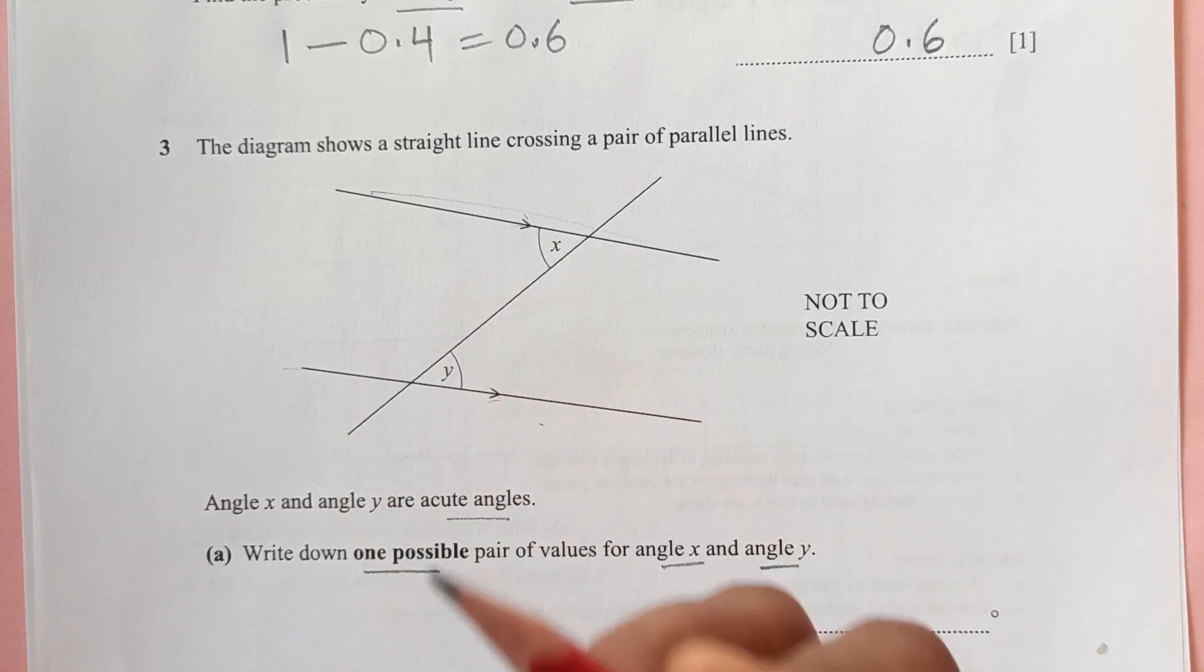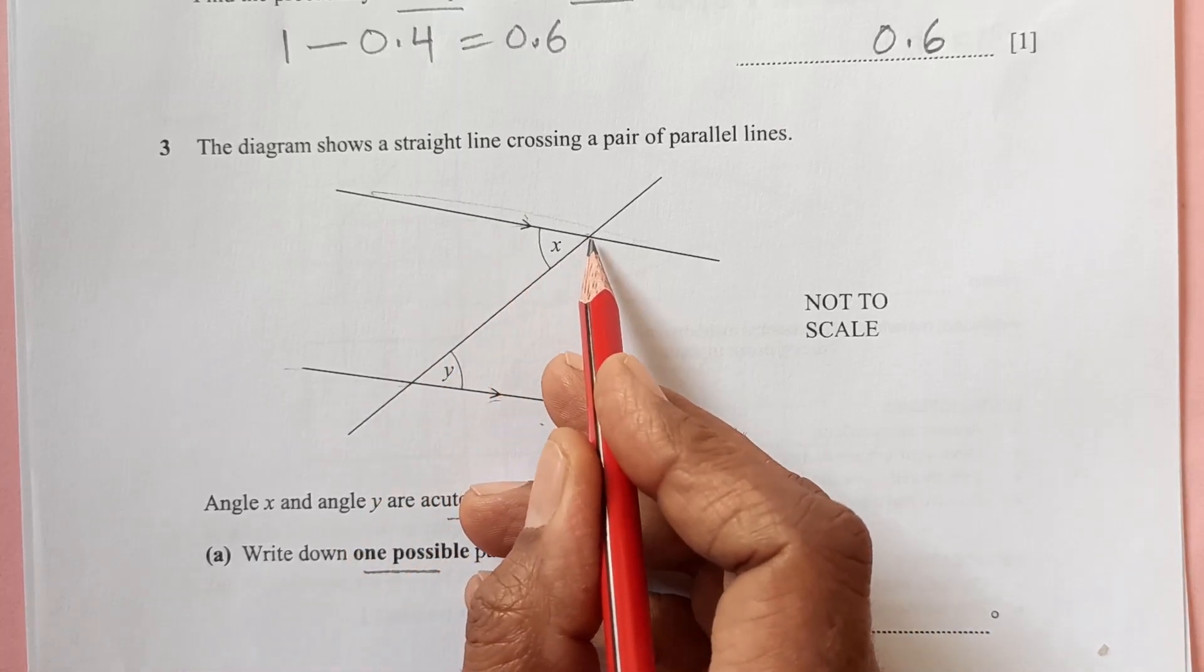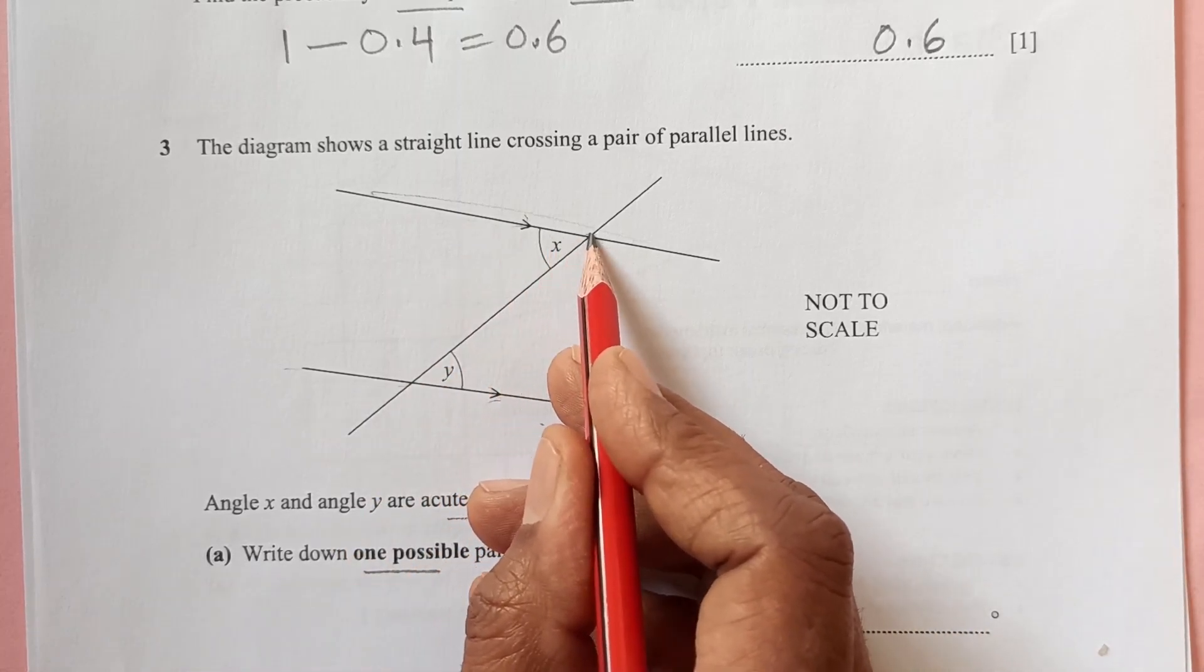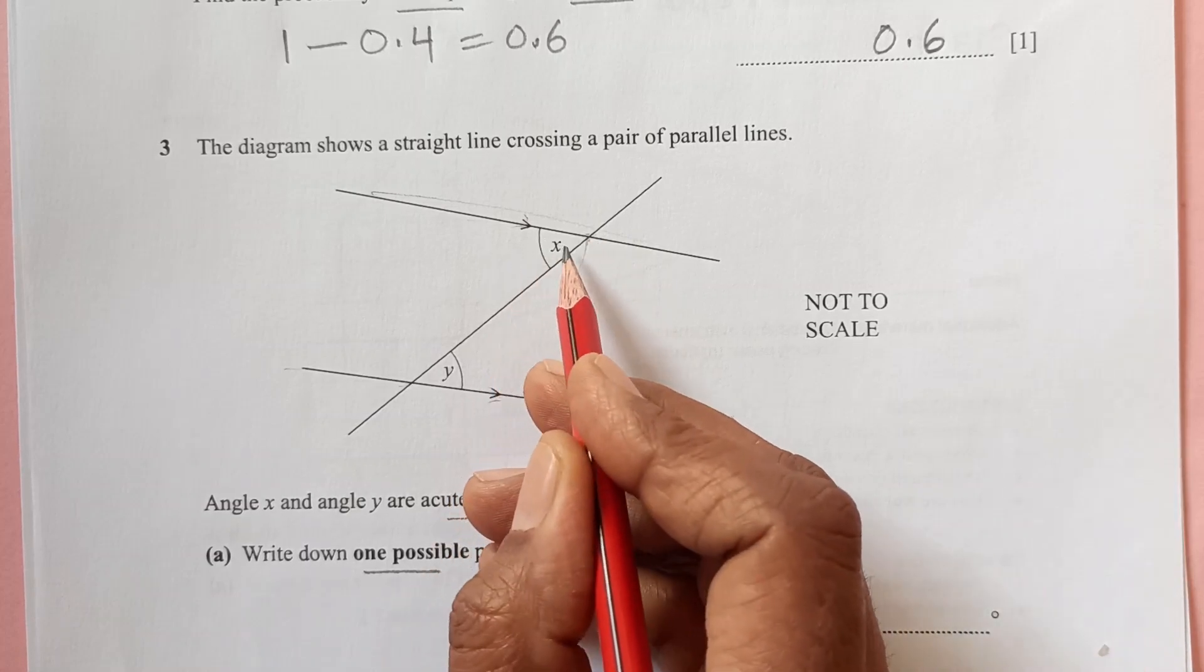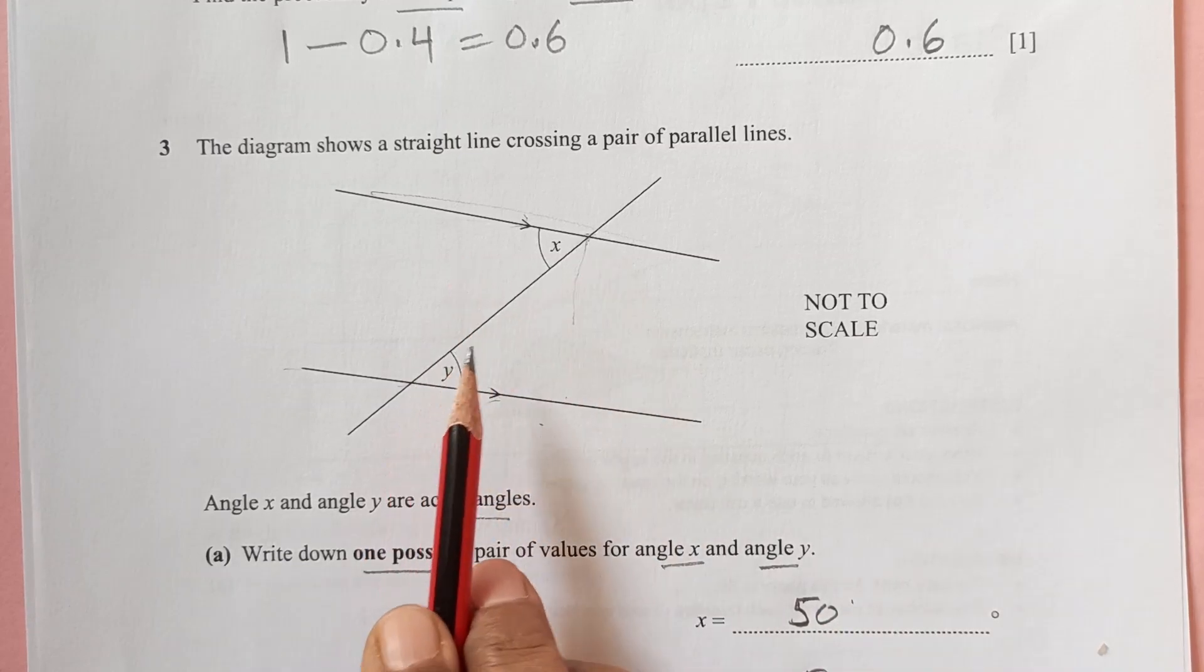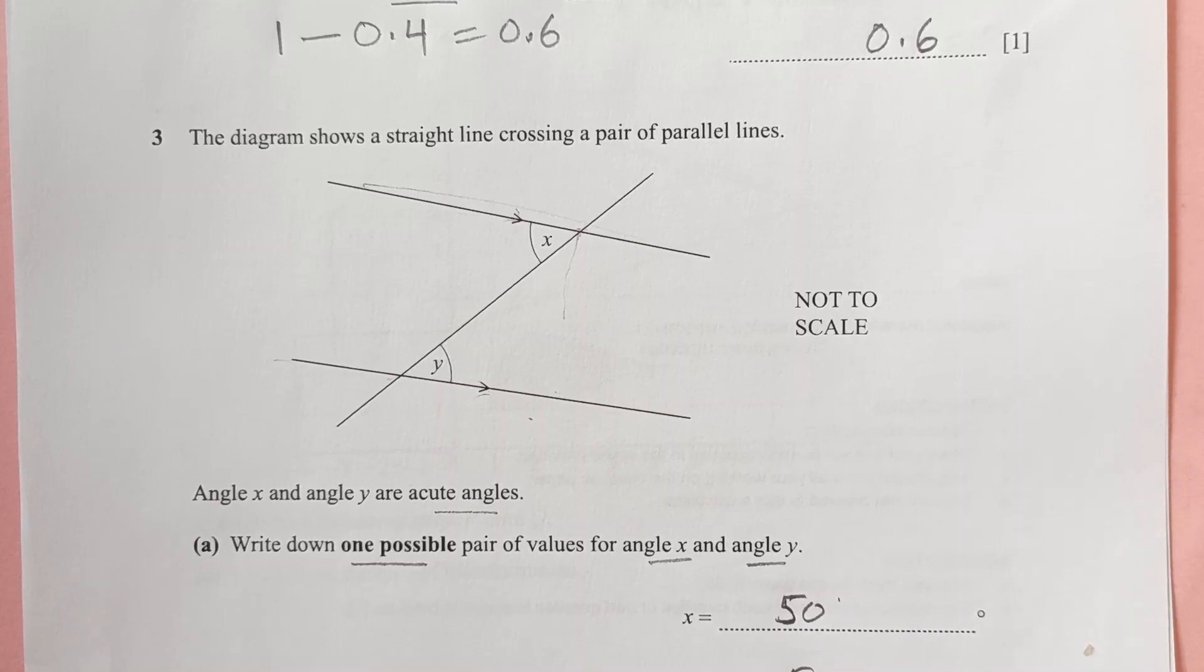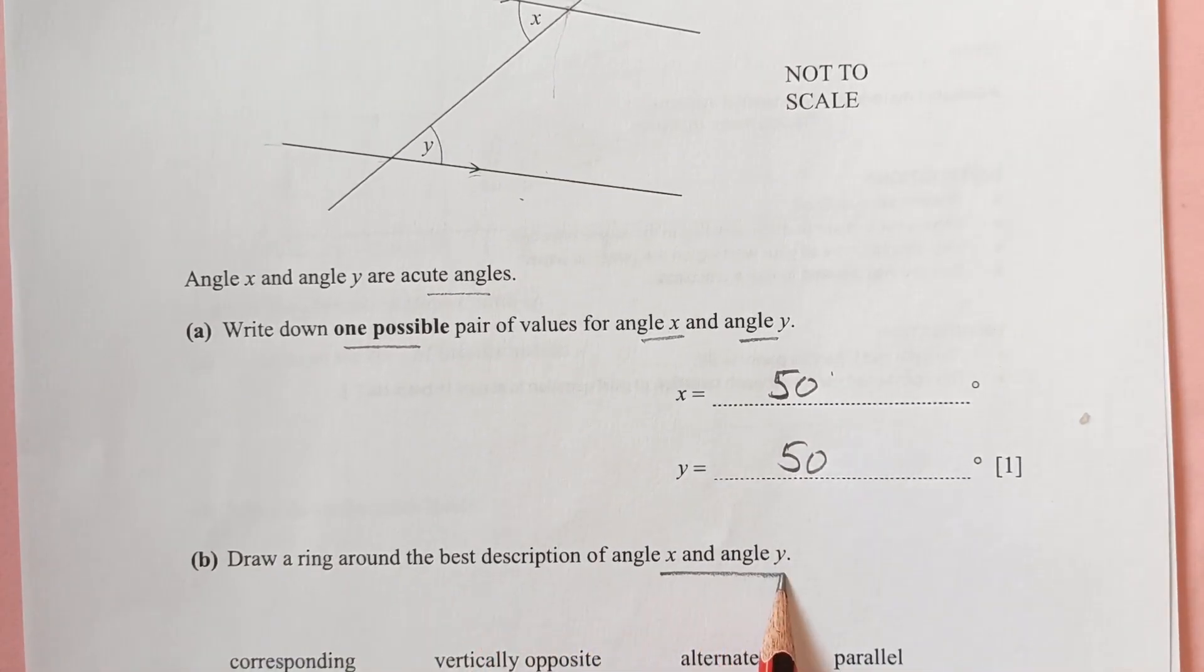Any angle less than 90, so you can write down any angle. Because they will be the same, we can choose any, let's say this angle may be around 50 degrees, so your answer may be different, it may be 60, it may be 70, because they are acute angles, so you can mention any of these values.